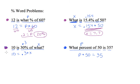10 is 30 percent of what? I have to solve for X, so I have to undo timesing by .3, so I'll divide both sides by .3. So I get X equals, I type in 10 divided by .3 on my calculator, and I get 33.3 repeating.